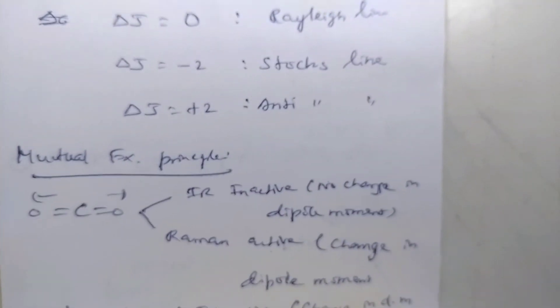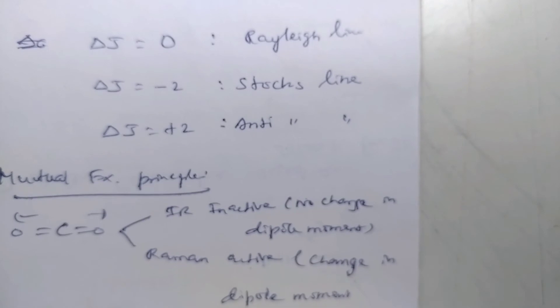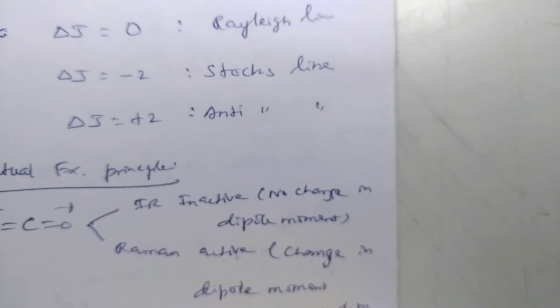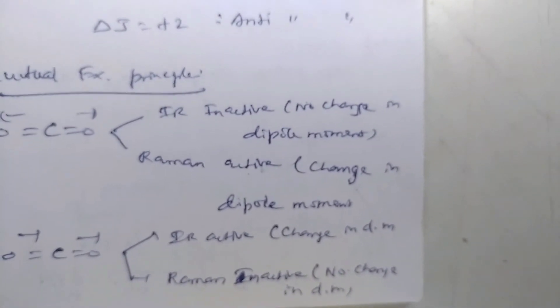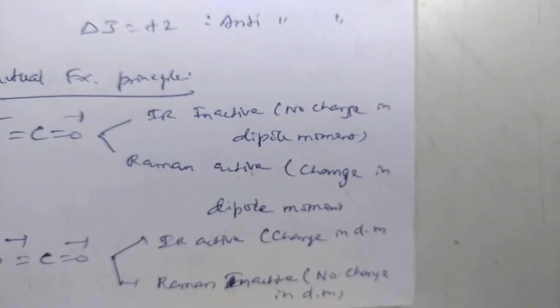Mutual exclusion principle. For carbon dioxide: IR inactive for no change in dipole moment, Raman active for change in dipole moment. Same carbon dioxide: IR active for change in dipole moment, Raman inactive for no change in dipole moment.